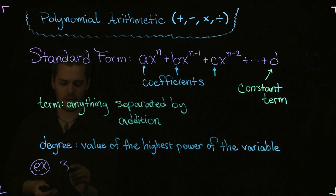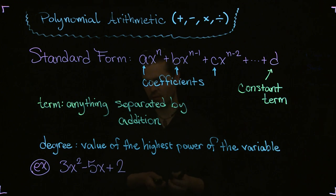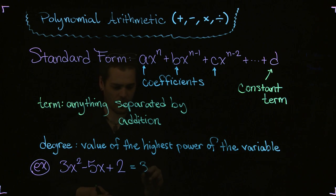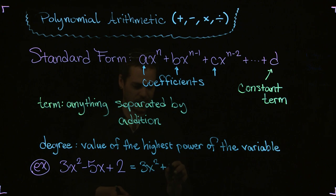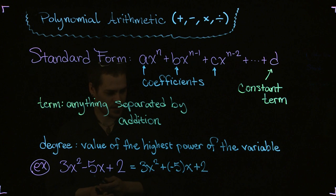Suppose we had 3x² - 5x + 2. This polynomial we would call a trinomial because there are three terms. Remember, even though this is a minus right there, it is technically separated by addition because I could put plus a negative. You could write it like this and it's exactly the same thing. I do that just to point out that there are indeed three terms, and the coefficient of this term in the middle is -5.